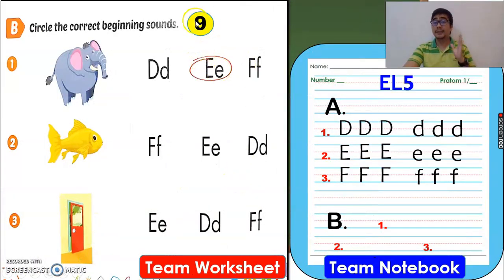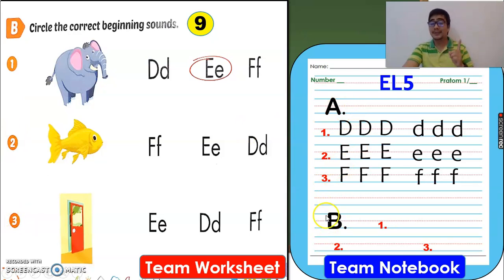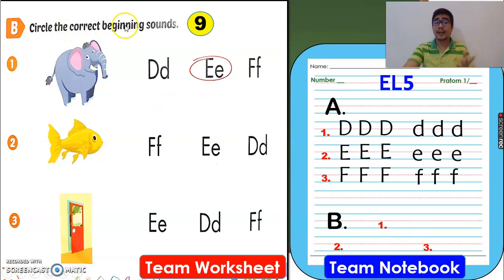Still on page 9. Team worksheet, Activity B. We have three questions: one, two, and three. For the notebook, please write letter B, numbers one, two, and three. So let's start. Activity B: circle the correct beginning sounds. All you have to do is find the beginning sound or the beginning letter.